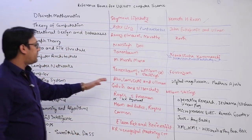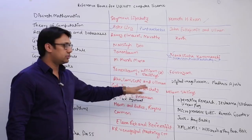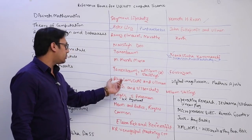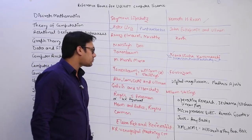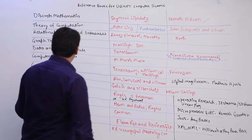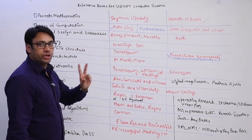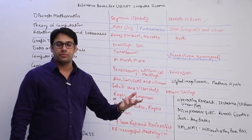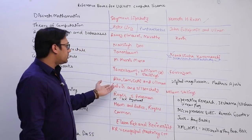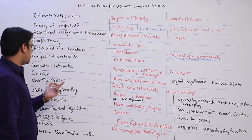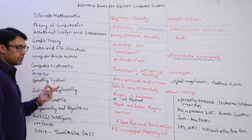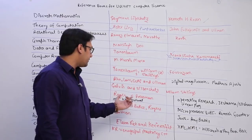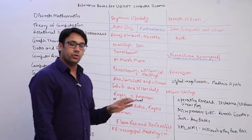For Compiler Design, Ullman is the only book you need — the authors are Aho, Sethi, and Ullman. For Operating Systems, the only book you need to refer is Galvin. William Stallings is an option, and you can also refer Tenenbaum for Operating Systems, but if you want just one book, Galvin is sufficient and you don't need anything else.